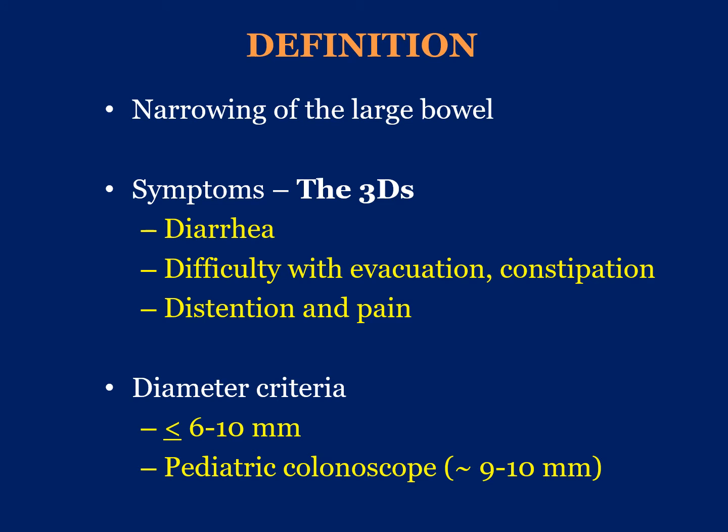Let's define the colorectal stricture as a narrowing of the large bowel. The symptoms can be summarized by the three Ds: diarrhea, difficulty with evacuation and constipation, and distension and abdominal pain with bloating. In terms of diameter criteria, anything less than 6 to 10 mm is considered a stricture. In my own practice, any symptomatic patient with a stricture I cannot traverse with a pediatric colonoscope is considered a stricture.